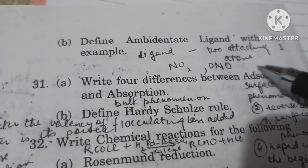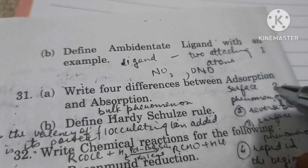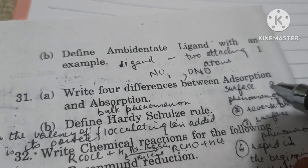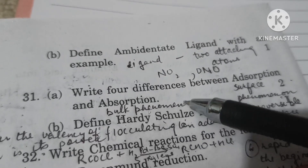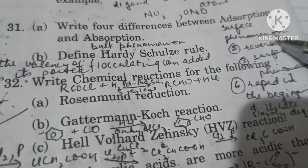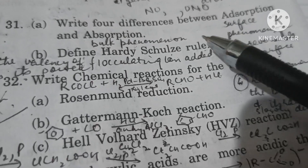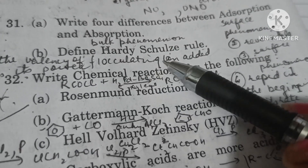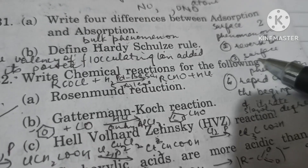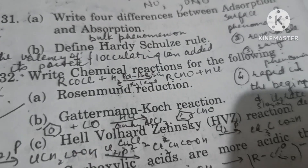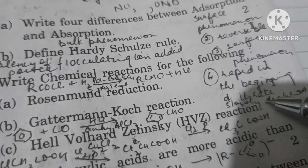Write four differences between adsorption and absorption: (1) Adsorption is a surface phenomenon where molecules accumulate more on the surface than in the bulk, whereas absorption is a bulk phenomenon where molecules are absorbed deep into the bulk. (2) Adsorption is more or less reversible, whereas absorption is generally irreversible and reversed only with difficulty. (3) The rate of adsorption is rapid initially and then decreases, whereas absorption occurs at a uniform rate.